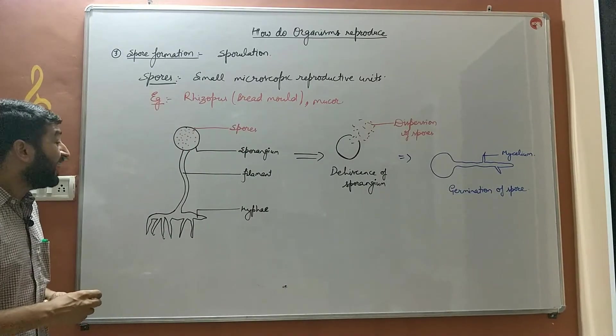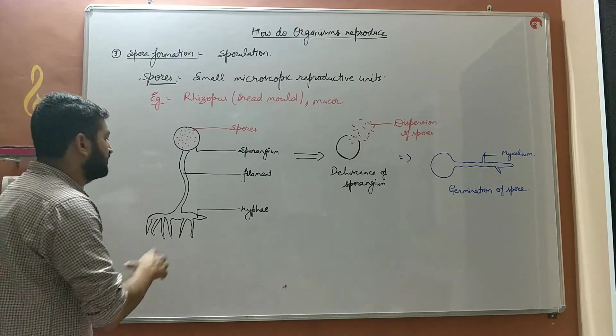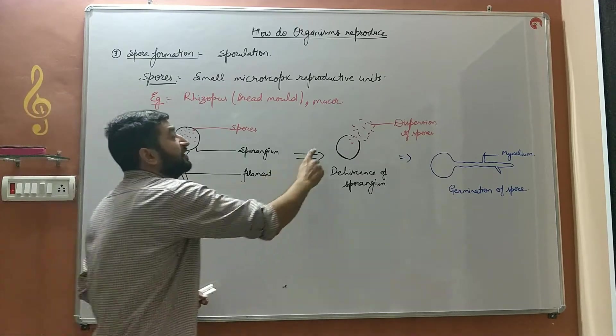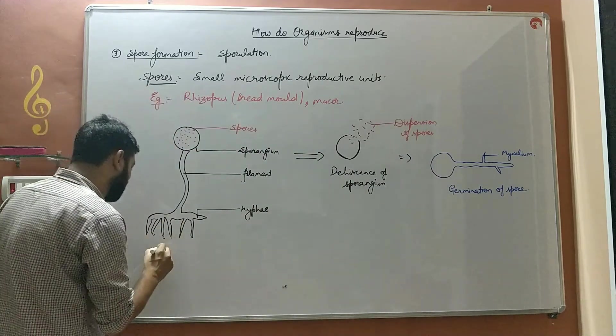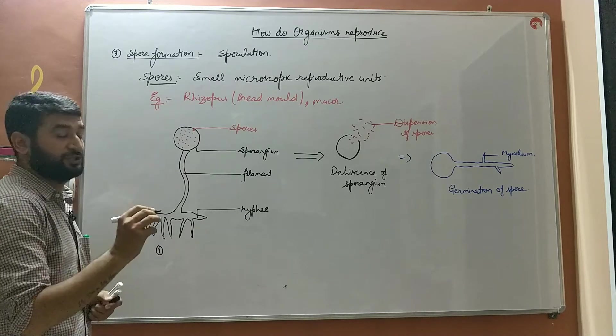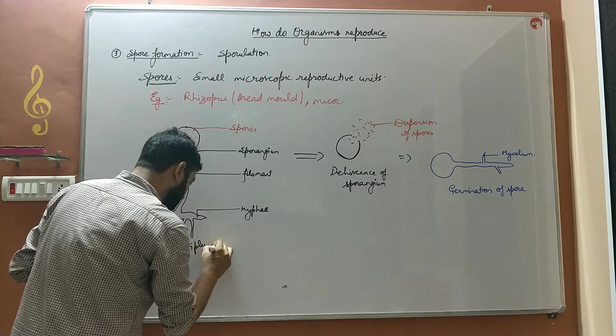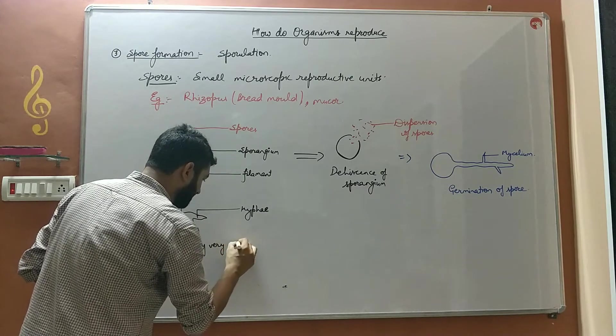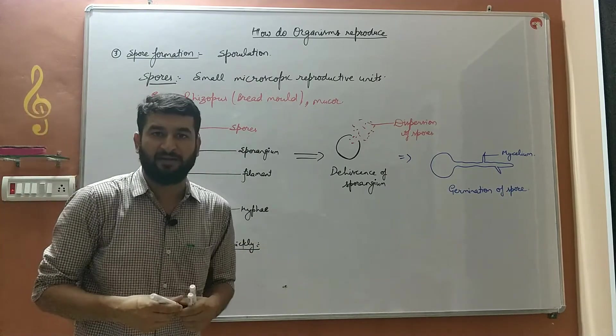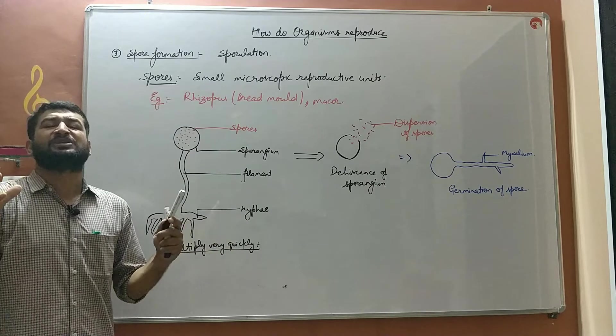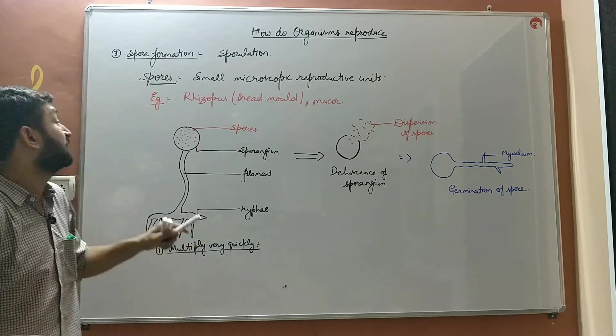So that's how spore formation is an asexual mode of reproduction in which a single parent will give rise to a multiple number of organisms. This is the first advantage of spore formation, that they multiply very quickly or you can say the multiplication rate is high. Multiple organisms are produced as number of spores is quite high.